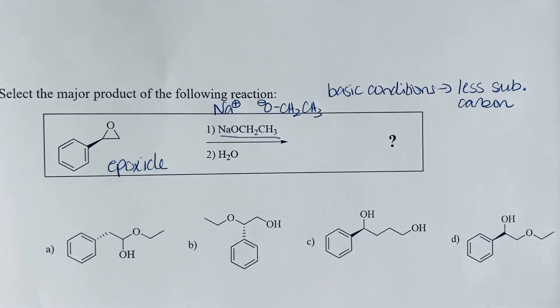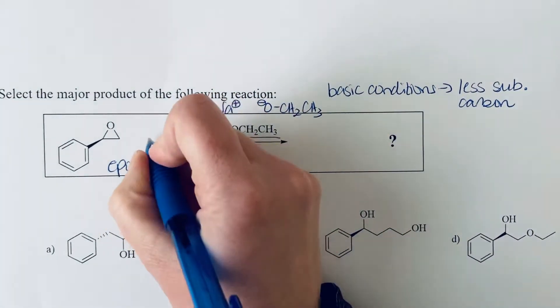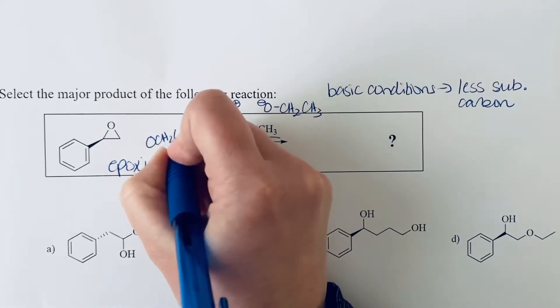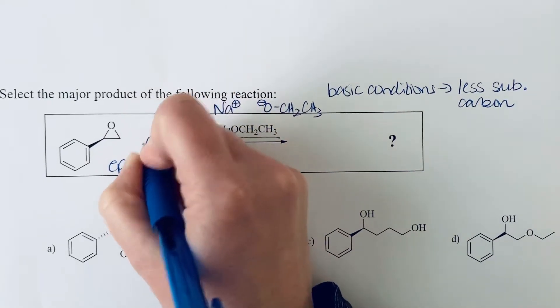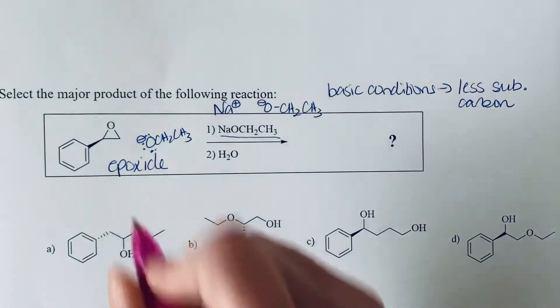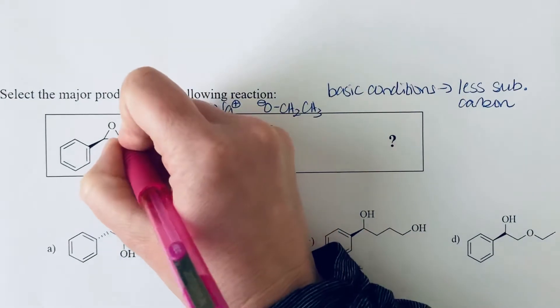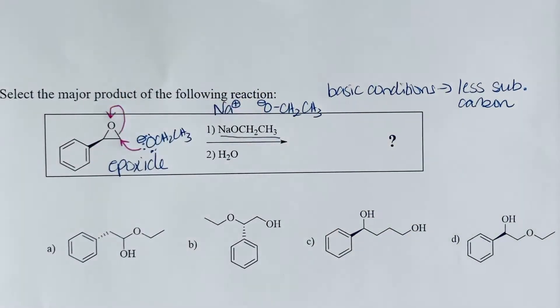That tells us when we're drawing our mechanism that we're going to have this base attack this less substituted carbon. I'm going to redraw the base a little bit closer so we can see where the reaction is occurring. You have a negative charge here, and this is attacking the less substituted carbon of the epoxide and breaking open that bond.